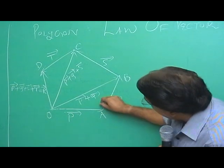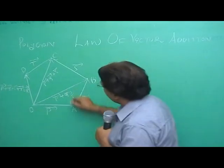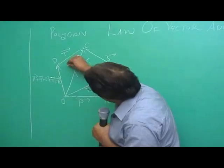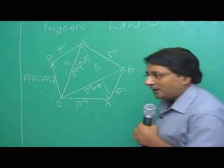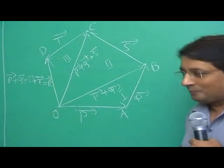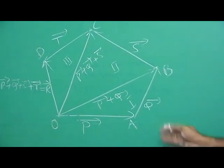So you have triangle law in OAB, you have a triangle law in OBC, you have a triangle law in OCD. So my dear students, you find polygon law of vector addition is nothing but a modification over a triangle law.